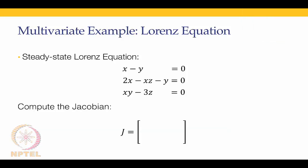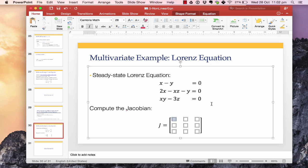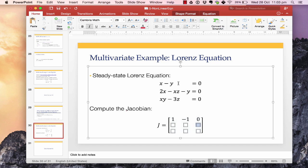The Jacobian is computed as follows. The (1,1) element is the partial derivative of f1 with respect to x, which equals 1. The (1,2) element is the partial derivative of f1 with respect to y, which equals minus 1. The (1,3) element is the partial derivative of f1 with respect to z, which is 0.